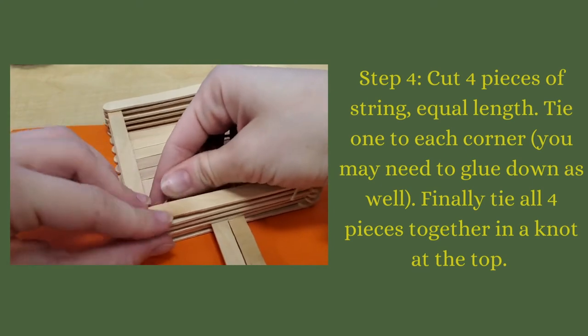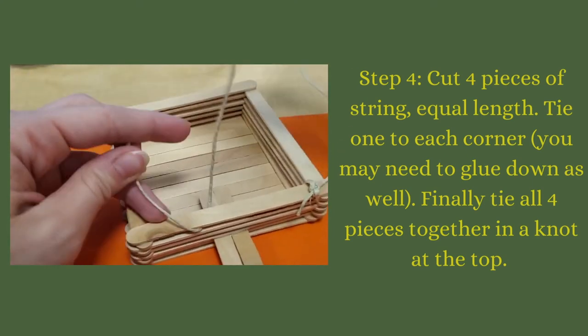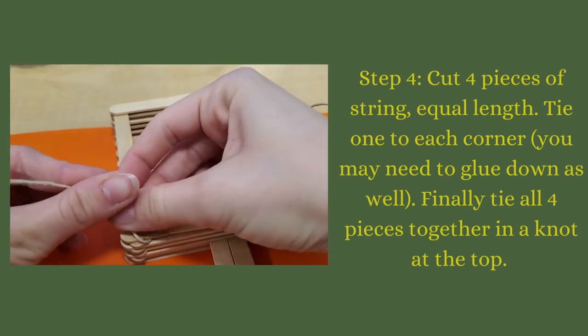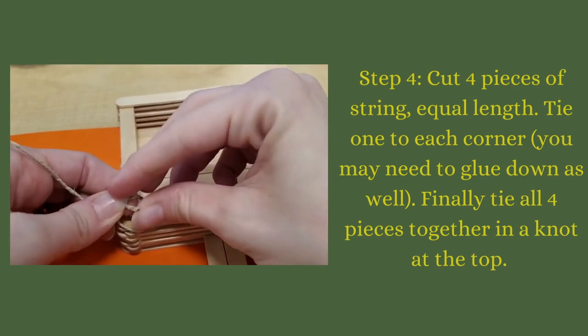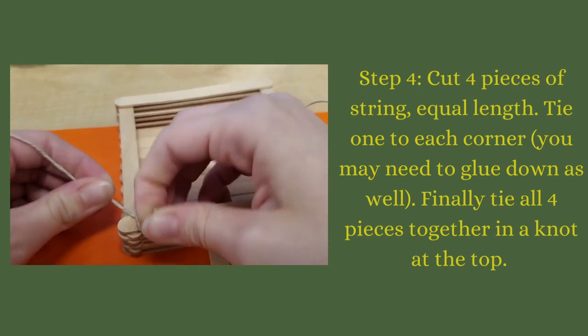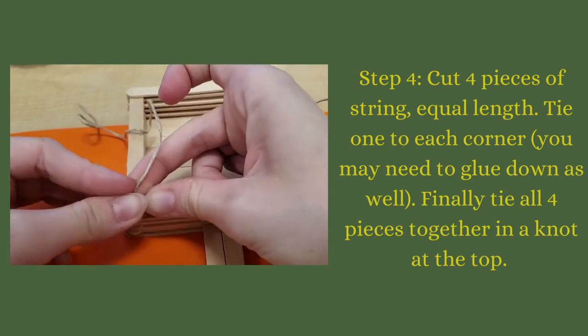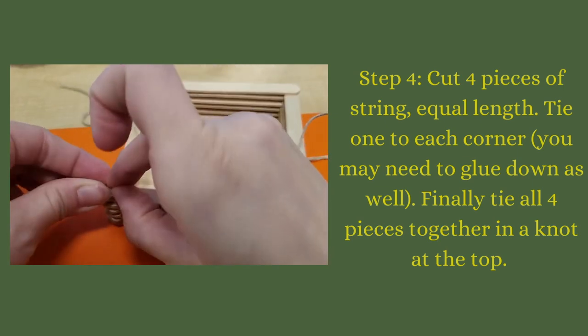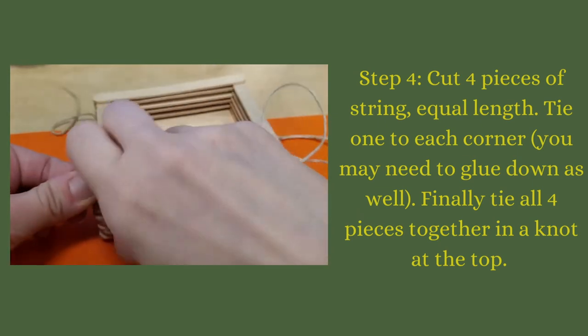Next you're going to cut four equal pieces of your string, hemp, or yarn that you picked. You're going to tie one to each corner. You may need to glue them down on each side as well. And finally tie all four pieces together in a knot at the top.